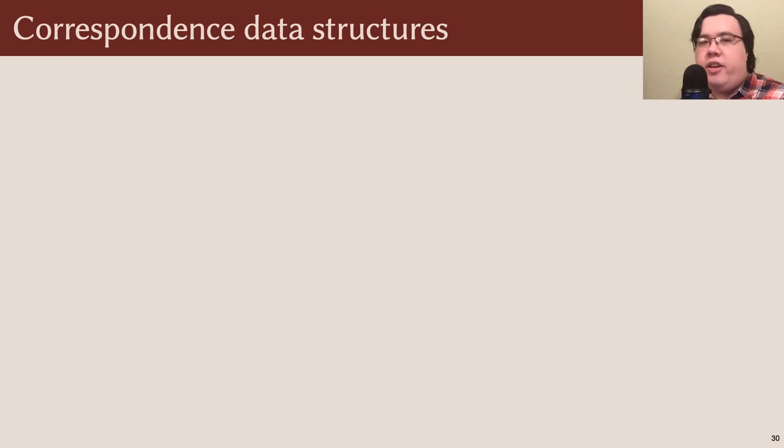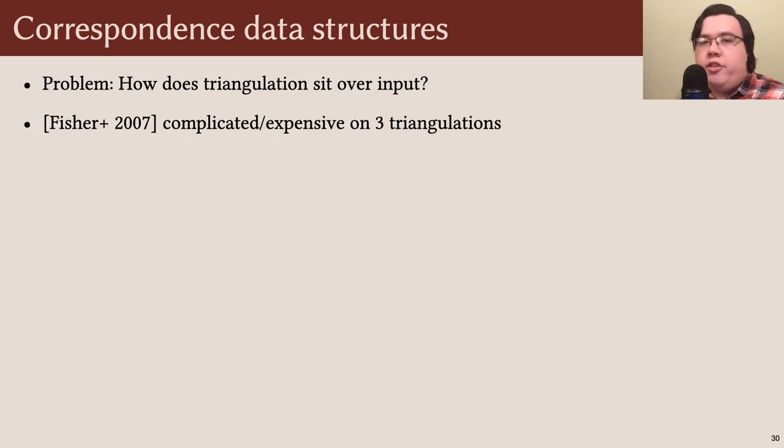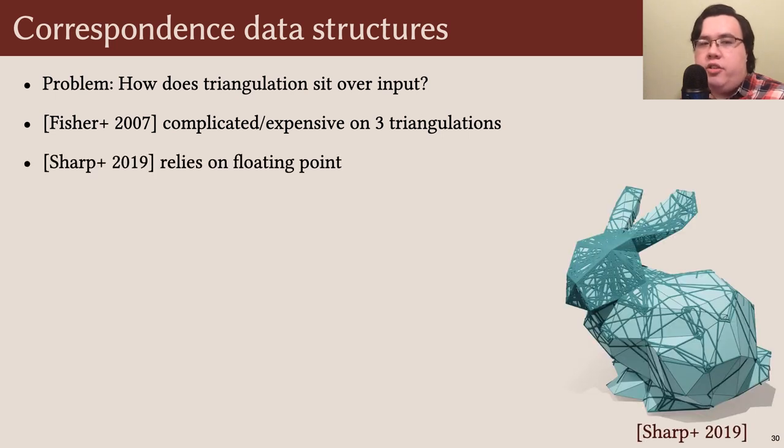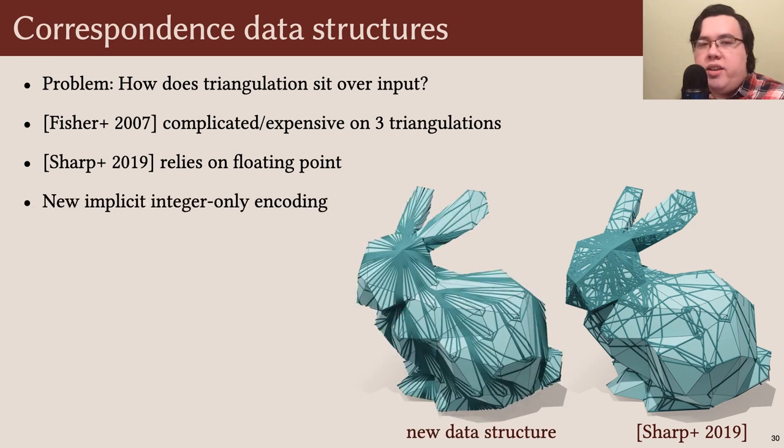The geometry of an intrinsic triangulation is determined purely by its edge lengths, but this geometry alone is not sufficient for us. We also need to know how the intrinsic triangulation sits over the input mesh. Unfortunately, existing schemes for correspondence tracking are inadequate for our purposes. The overlay mesh of Fisher and colleagues explicitly stores all intersections between triangulations, which gets very complicated and computationally expensive in our setting where there are three of them. On the other hand, the signpost data structure of Sharp and colleagues relies essentially on floating point, which can become inaccurate in the complex hyperbolic triangulations that we encounter.